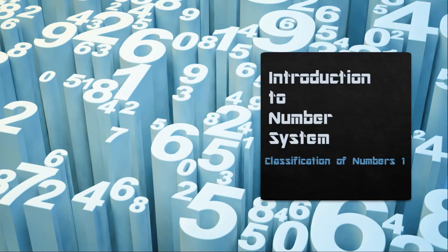Welcome to Percentilers. This is the first part of Number System. Number system is an important chapter from the CAT and other exams point of view. All the questions of number system are regularly decreasing in the actual exam. In CAT 2019 there was not a single question on number system; in CAT 2018 there were only two questions, and in CAT 2017 there were also only two questions.